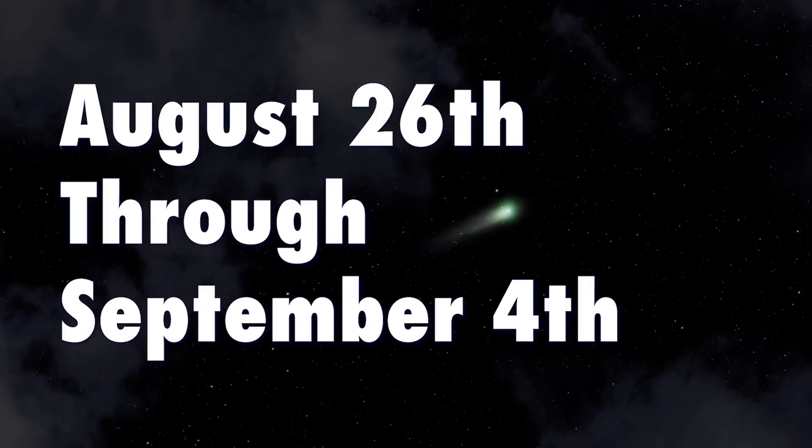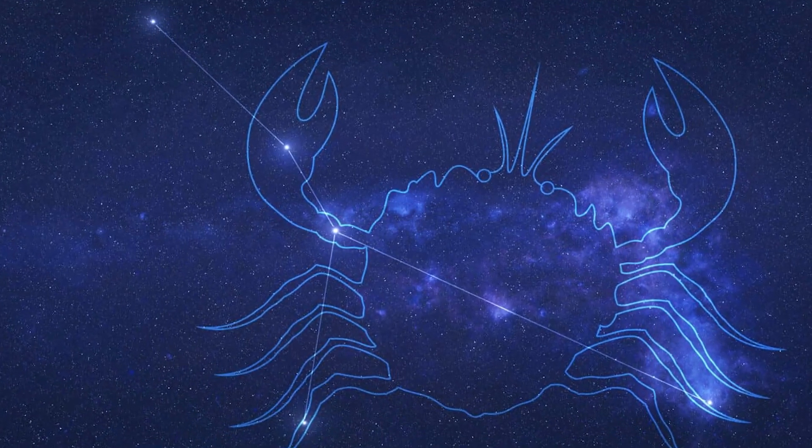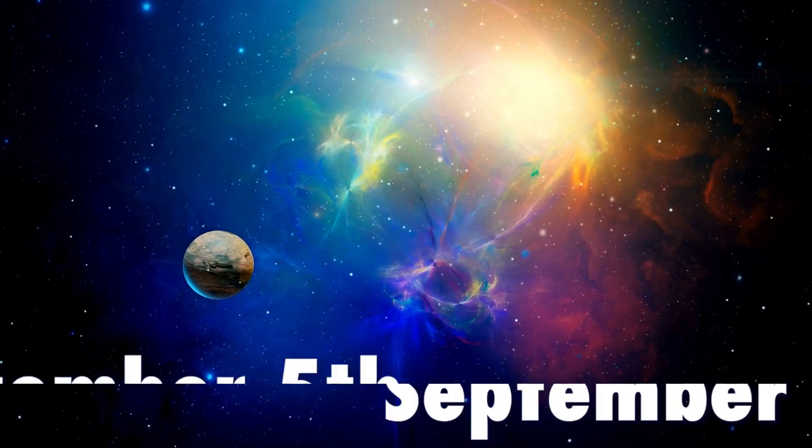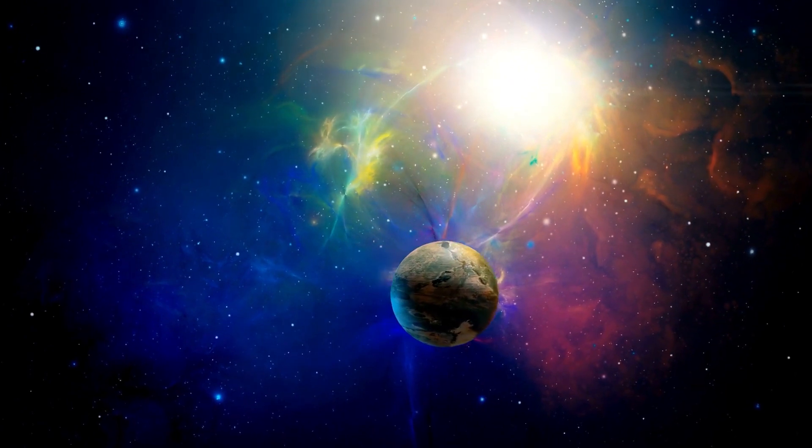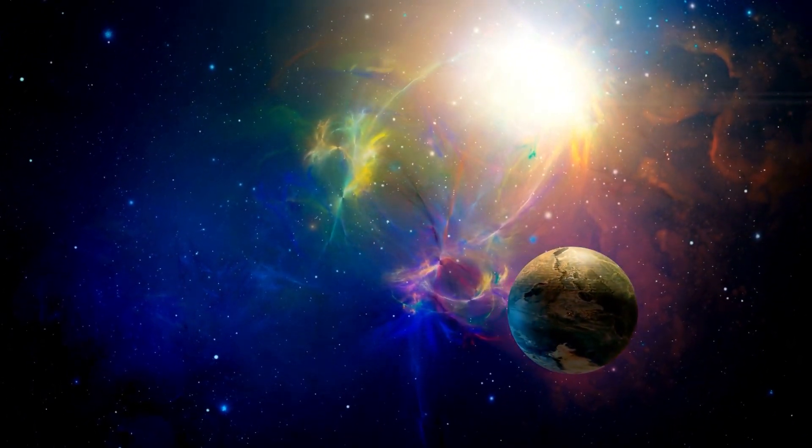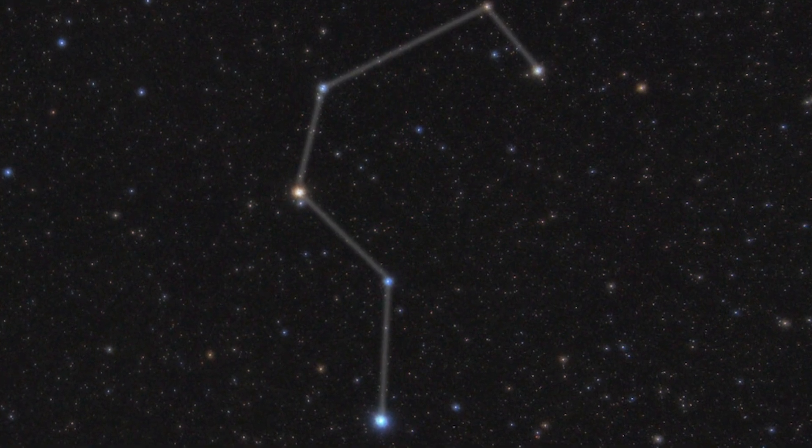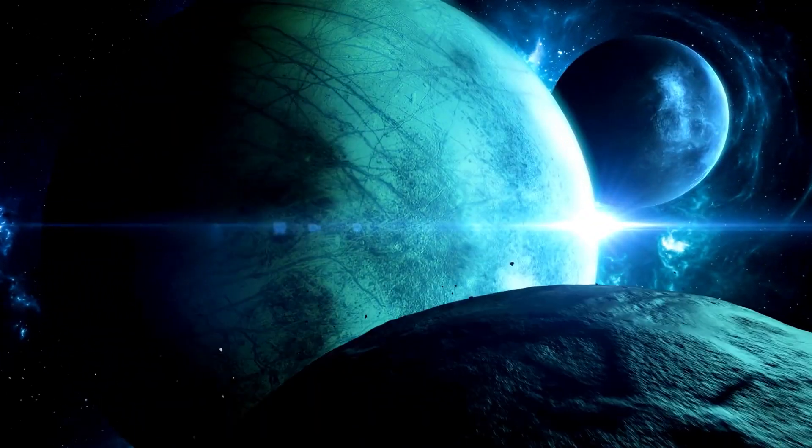From August 26th through September 4th, the comet's journey will lead it through the dim stars of Cancer, the constellation resembling a crab. Then, starting on September 5th, the comet's trajectory will carry it across the upper section of the recognizable arrangement of stars called the sickle, which forms a reverse question mark and outlines the head and mane of Leo the lion.